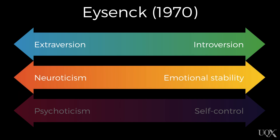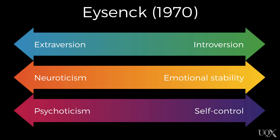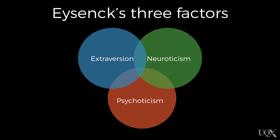The second dimension is neuroticism to emotional stability, going from full of anxiety, worries and guilt, to relaxed and at peace. The third is psychoticism to self-control, going from aggressive, egocentric and antisocial, to kind and considerate, obedient of rules and laws. Eysenck's idea was that temperament is determined by a combination of these three dimensions, and that they relate to something going on in the brain.